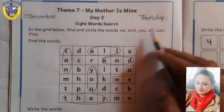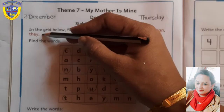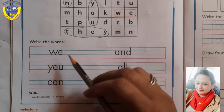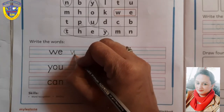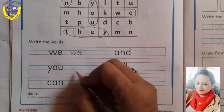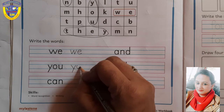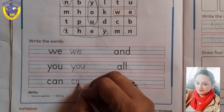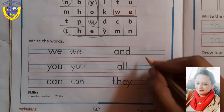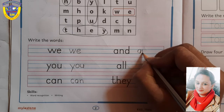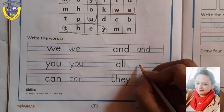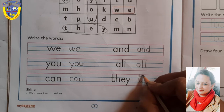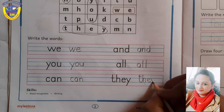All — done. Can — done. They — done. Now students, write the words. Speak and write. W-E. Y-O-U. C-A-N. Can. A-N-D. And. A-L-L. All. T-H-E-Y.